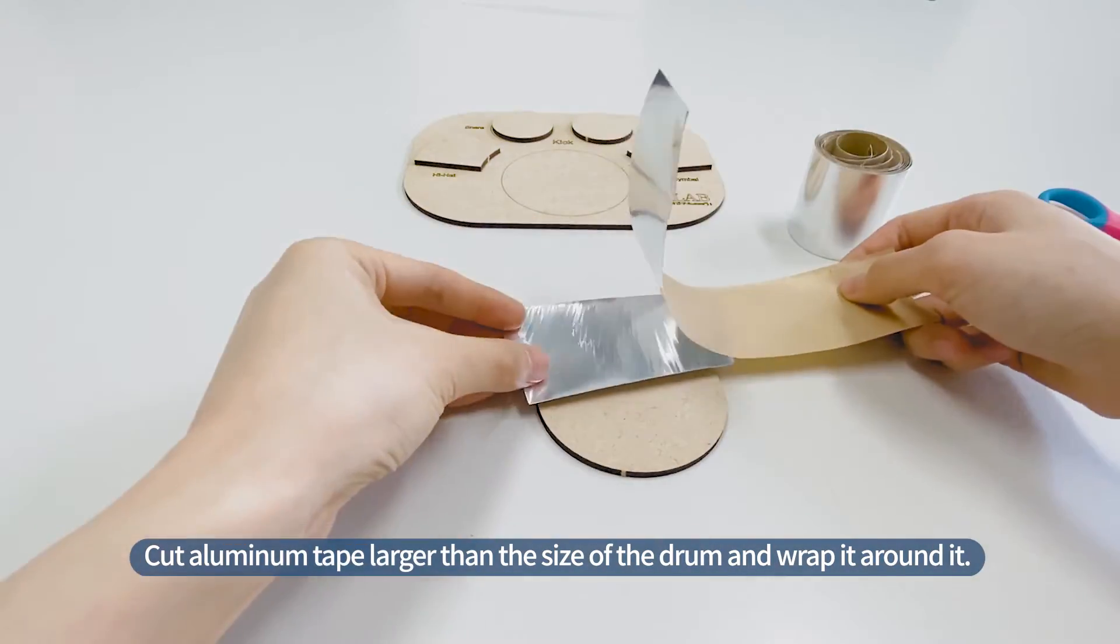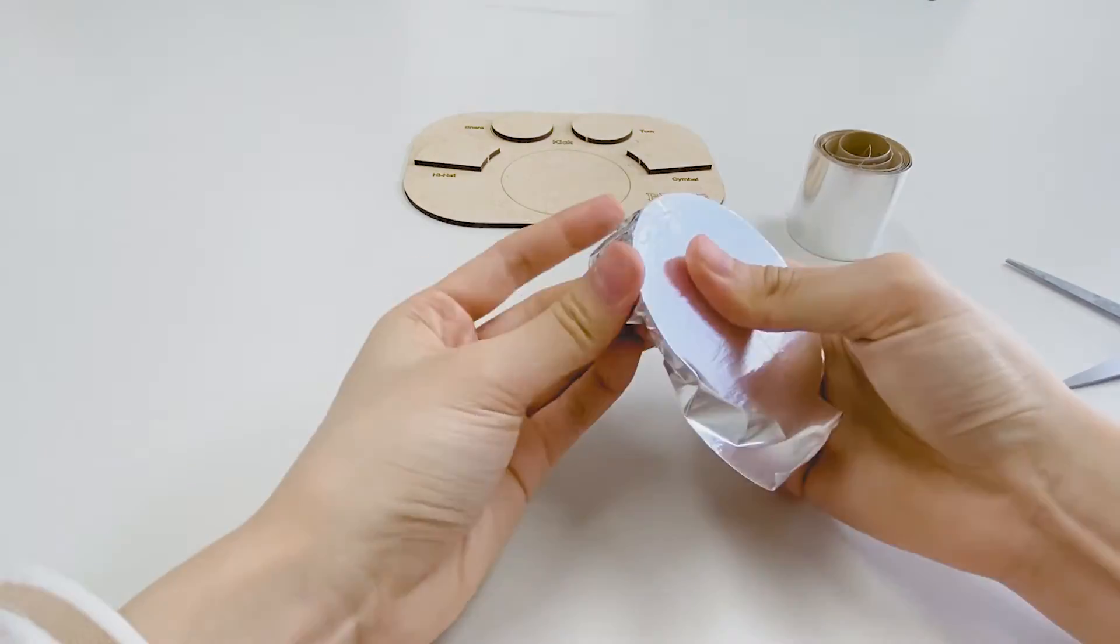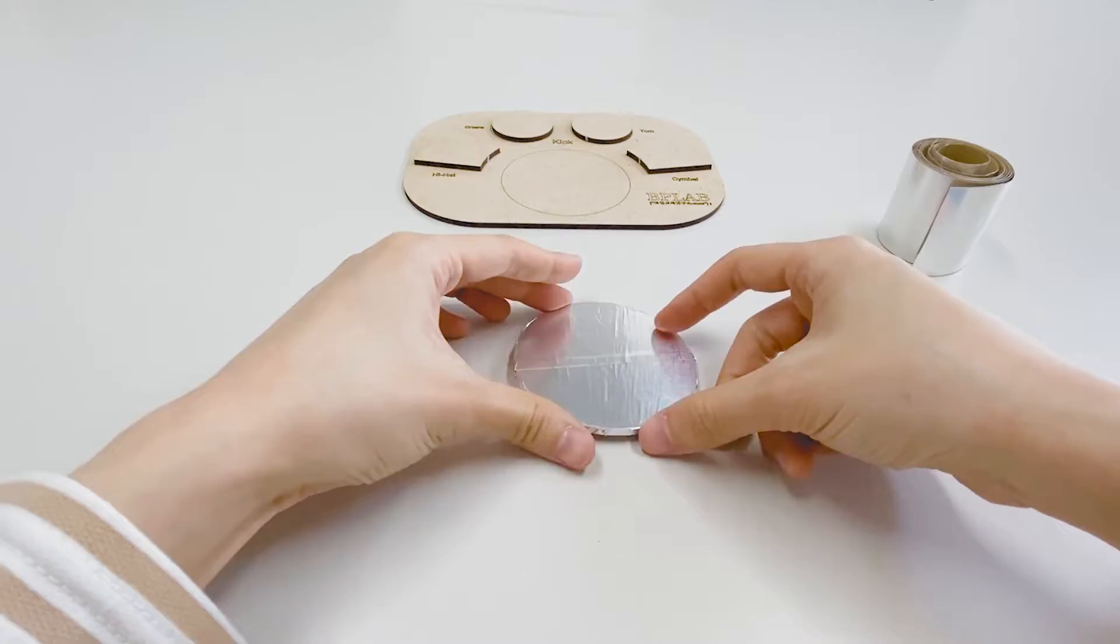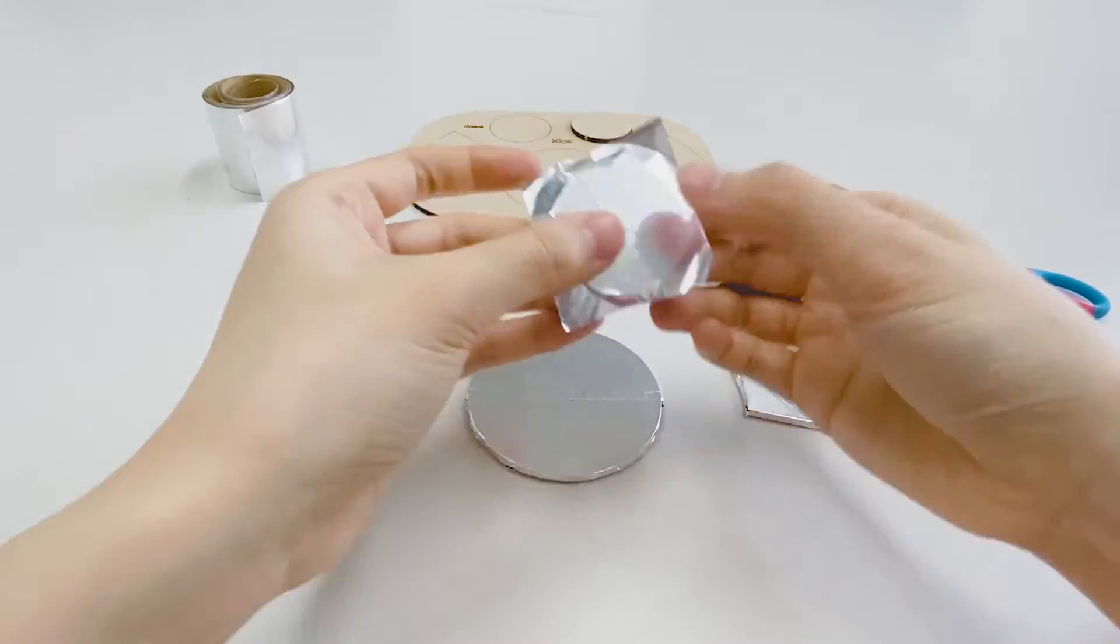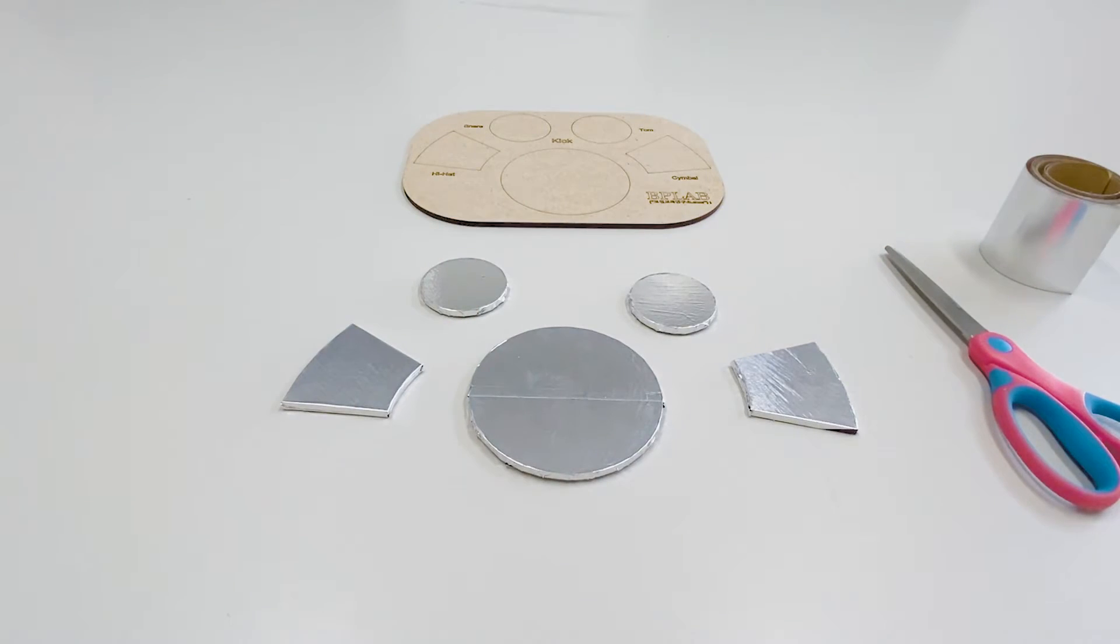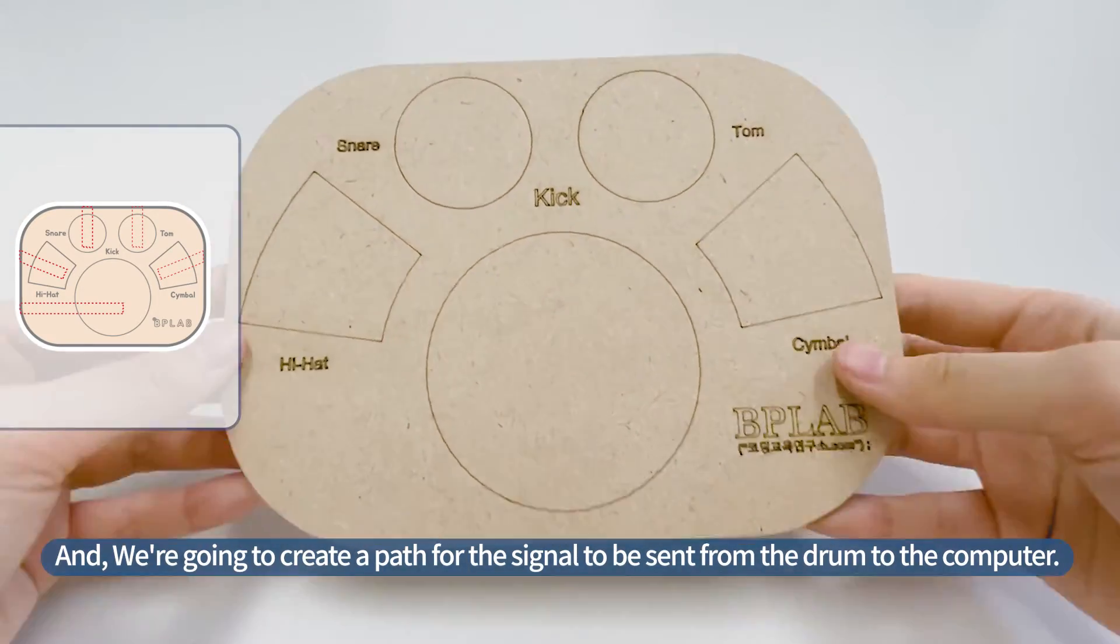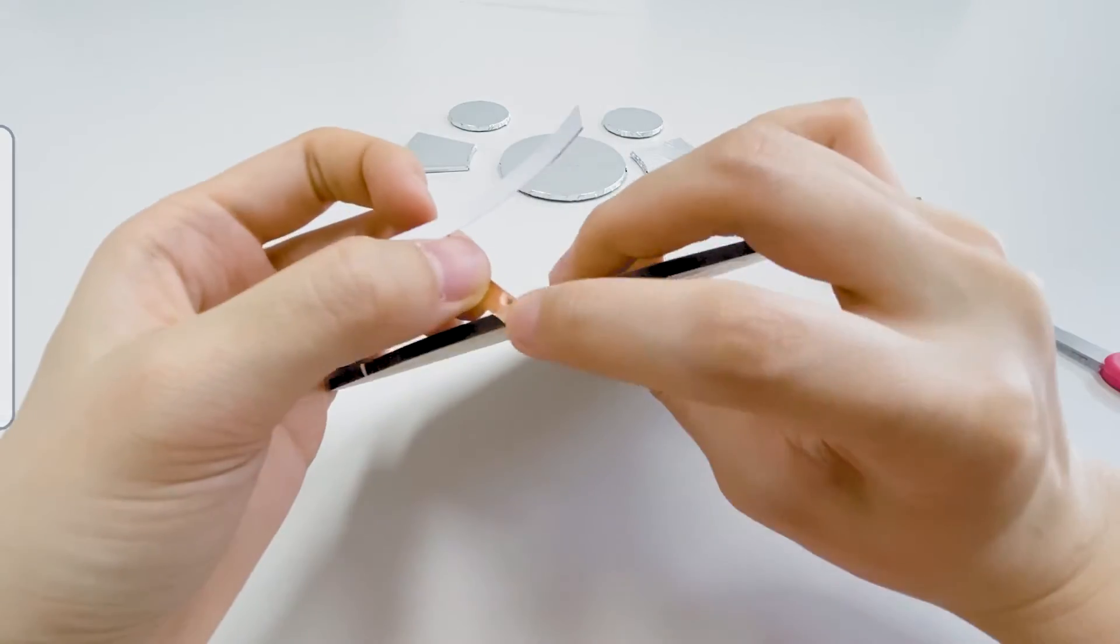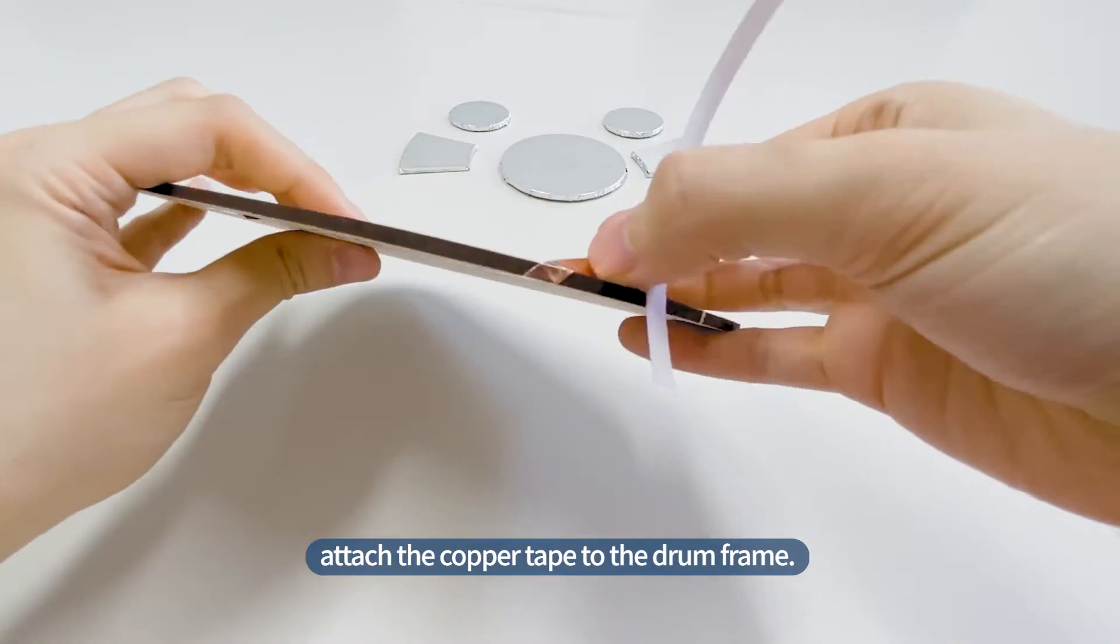Cut aluminum tape larger than the size of the drum and wrap it around it. We're going to create a path for the signal to be sent from the drum to the computer. Cut the copper tape into five pieces of appropriate length. Enough to cover the height of the drum, attach the copper tape to the drum frame.